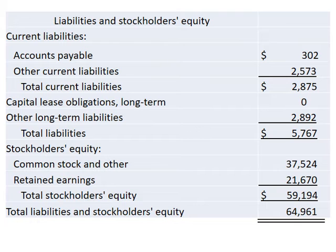Next is the stockholders' equity section, where common stock and retained earnings are listed, along with possibly other accounts covered in later chapters. We see the ending balance of retained earnings flow from the statement of retained earnings to the balance sheet. We total the stockholders' equity accounts, and finally arrive at total liabilities and stockholders' equity — the total of liabilities plus equity. This section is double underlined to show the total is complete. Total liabilities and stockholders' equity must equal total assets, because the balance sheet represents the accounting equation: assets equal liabilities plus equity. That is exactly the format of the balance sheet.